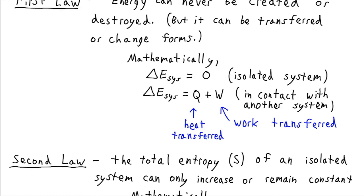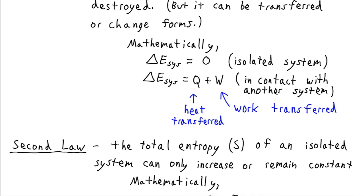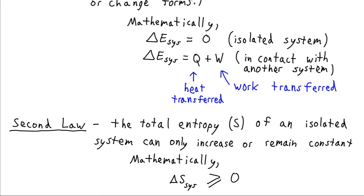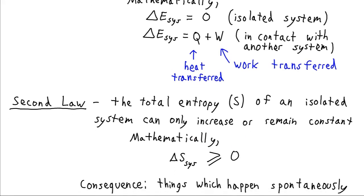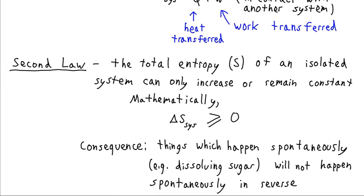The other super fundamental law of thermodynamics and of the universe itself is that the total entropy, which we can colloquially think of as the disorder of a system, and we'll represent that with capital S, that can only increase or remain constant for an isolated system. So the change in entropy of any isolated system will either be zero or some positive quantity. One of the important consequences of this is that anything which happens spontaneously always corresponds to an increase in entropy. For example, the dissolving of sugar when you put it in water just happens spontaneously, and that corresponds to a huge increase in entropy of the system.